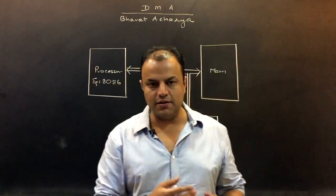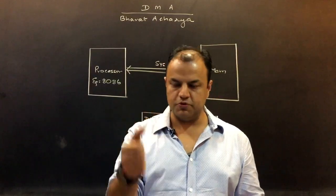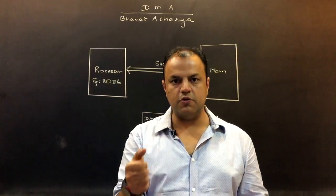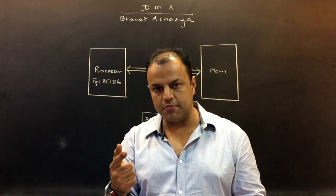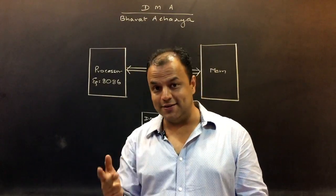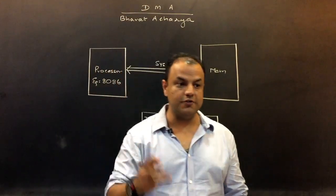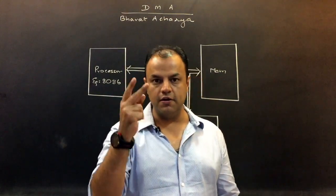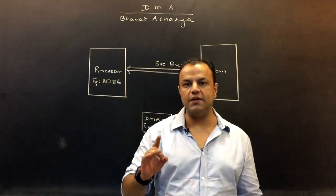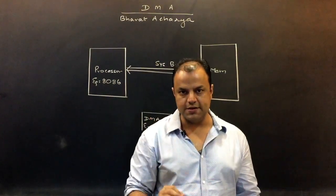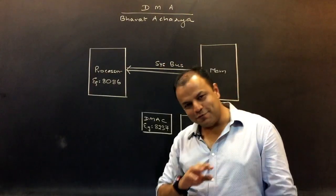There are four methods of IO data transfer — a heads up for COA. You have processor-based transfer, also called programmed IO. Better than that is interrupt-driven IO. Better than that is DMA. Better than that is IO processor. So unless you use another processor altogether, the fastest method of data transfer is DMA.